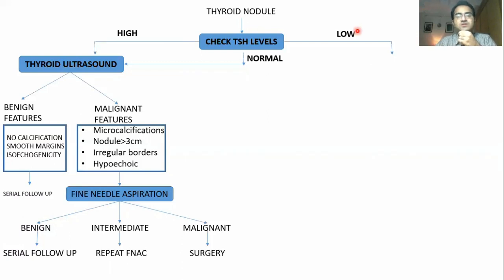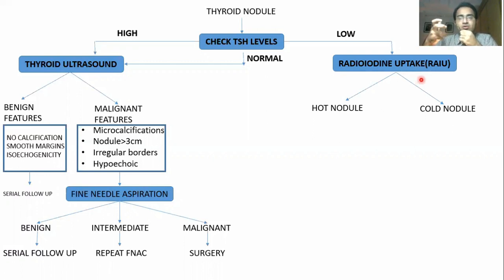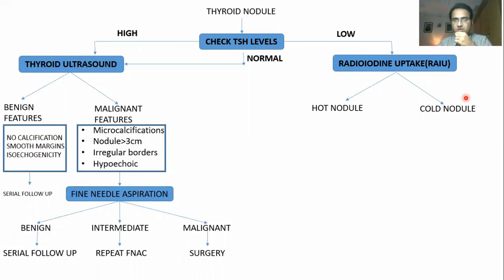If TSH levels are low, the next thing to do is radioiodine uptake. On radioiodine uptake, the nodule will be either hot or cold. We give radioactive iodine to the patient. Since thyroid hormone is produced using iodine, if the thyroid gland is hyper-functioning it will take up more iodine from the blood. We then take pictures showing whether the thyroid gland is taking too much or too little radioactive iodine — giving either a hot nodule or a cold nodule.